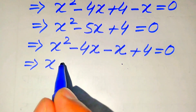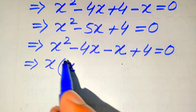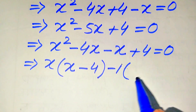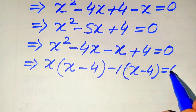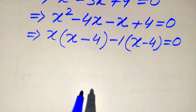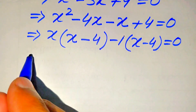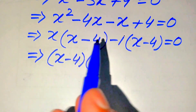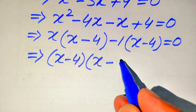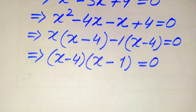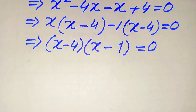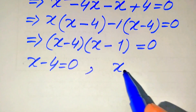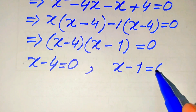We take x common from the first two terms, giving x(x minus 4), and then take minus 1 common from the last two terms, giving minus 1(x minus 4), so the equation becomes (x minus 4)(x minus 1) equals 0. Breaking this into two cases: the first case is x minus 4 equals 0, and the second case is x minus 1 equals 0.